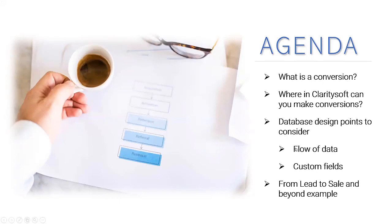The first thing you have to do is decide what your flow of data is going to be within the database. If you're starting in leads, that will be the first conversion you'll make. After that, you need to decide: does your company use sales opportunities, or do you go directly to quotations? A quote might go directly to a sale, or a quote may turn into an opportunity. Sit down and figure out the flow of data you want, then decide what custom fields and what data you want to transfer from one module to the next so it flows throughout the entire database.